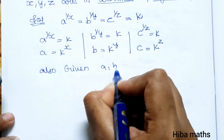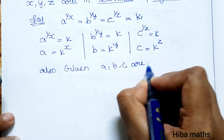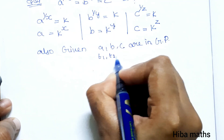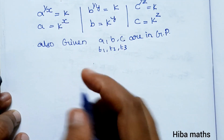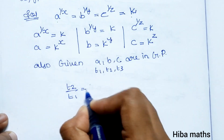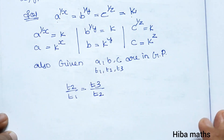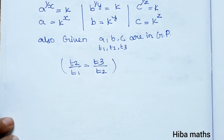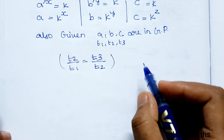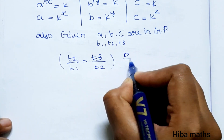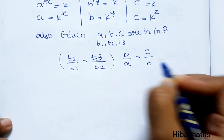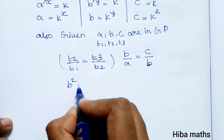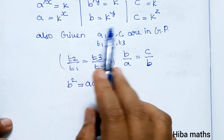Given a, b, c are in GP. The GP condition is: t2 divided by t1 equals t3 divided by t2, which means b squared equals a times c. This is the compulsory GP condition. Substituting: b squared equals a times c, so b cross multiply gives b squared equals ac.